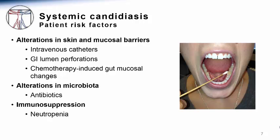IV catheters and wounds provide breaks in the skin through which microorganisms like candida can enter. Similarly, perforations of the gastrointestinal tract — including abdominal surgery, ruptured viscus, or the GI mucosal disruption that occurs during cancer chemotherapy — all provide entry sites for the movement of microbes from normal commensal locations to deeper tissues.